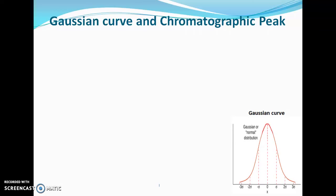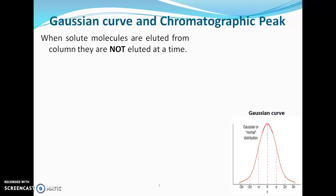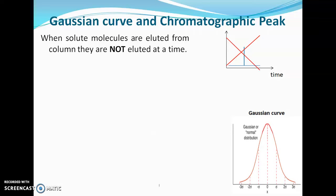Now, how exactly does the chromatographic peak resemble a Gaussian curve? When solute molecules are eluted from the column, they are not eluted all at once. If they were eluted at the same time, the chromatogram may look like a straight line, but this is not the case.